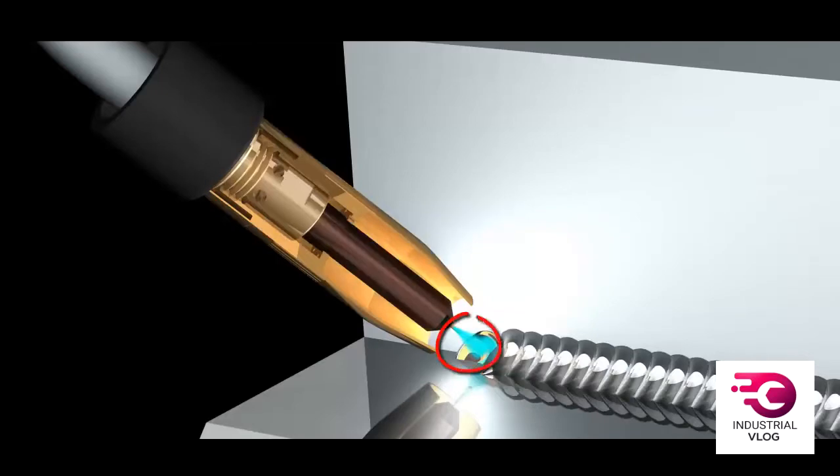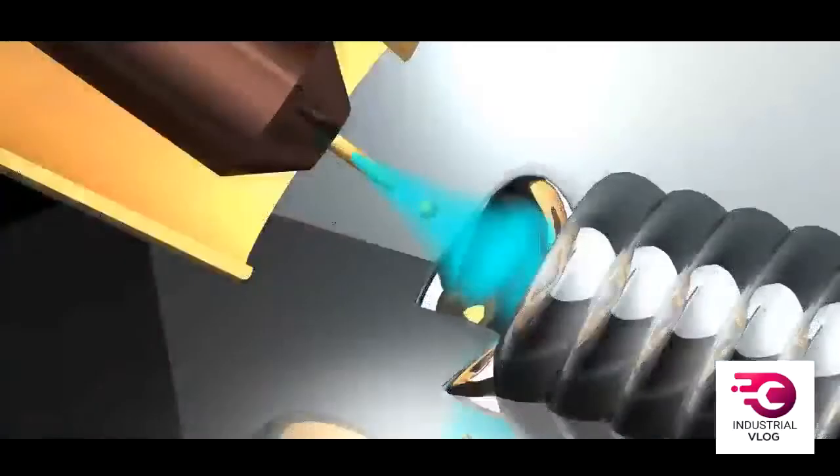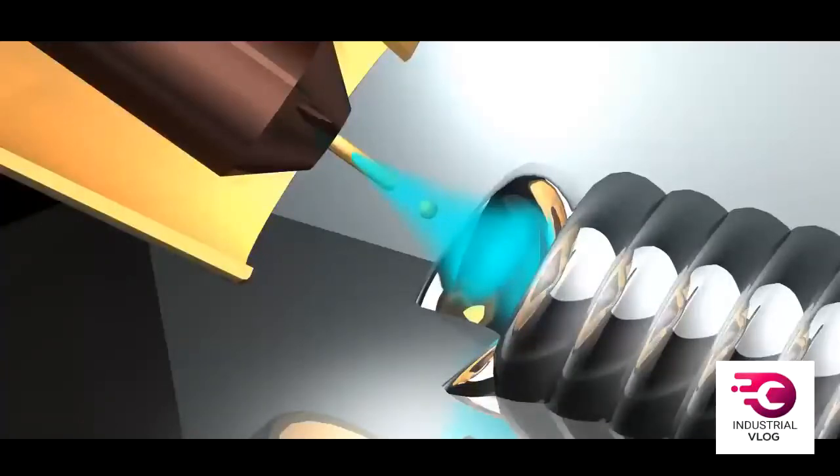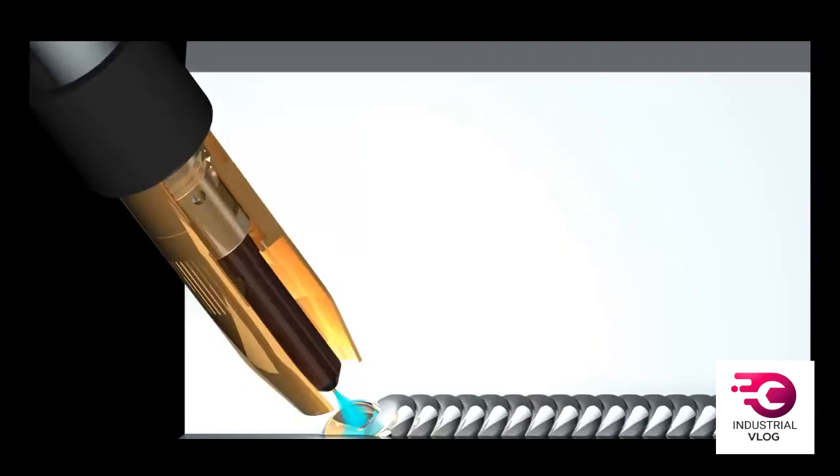An electric arc forms between this wire electrode and the workpiece and heats both metals above their melting point. These metals mix together or coalesce and solidify to join the workpieces into a single piece. The metal in these parts to be joined is called the base metal, and the metal that comes from the melting wire electrode is called filler metal.